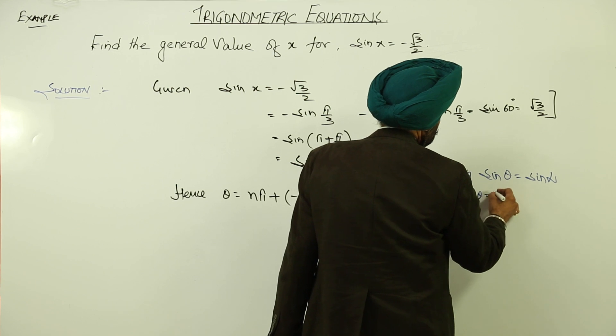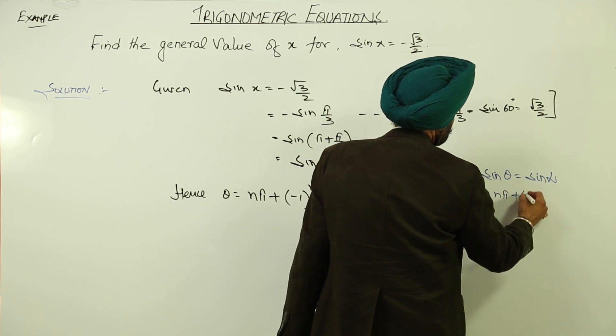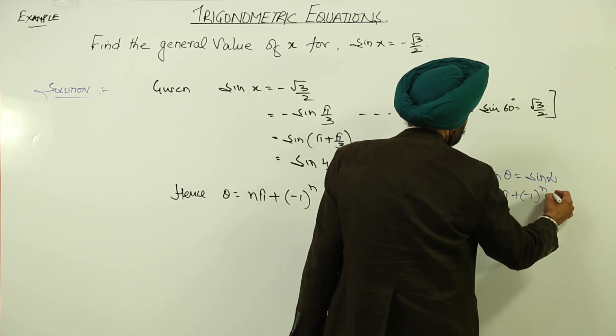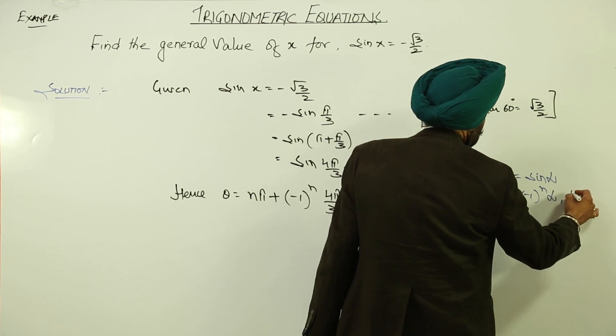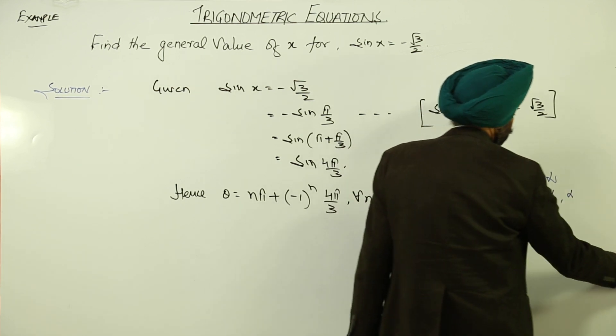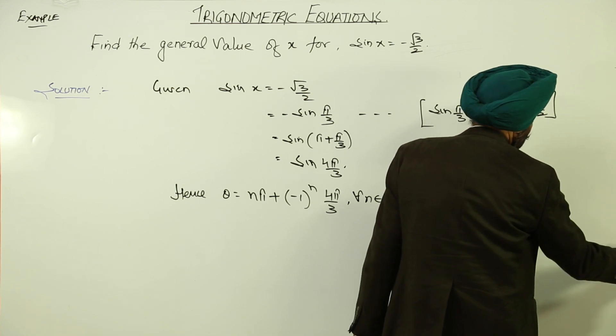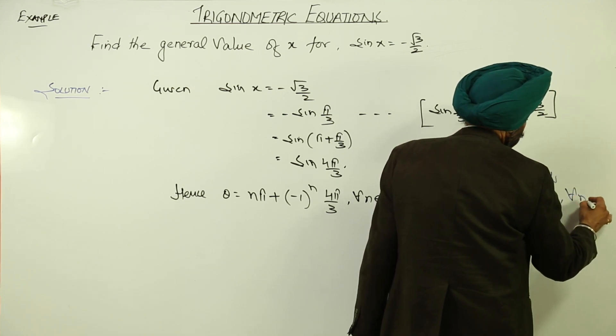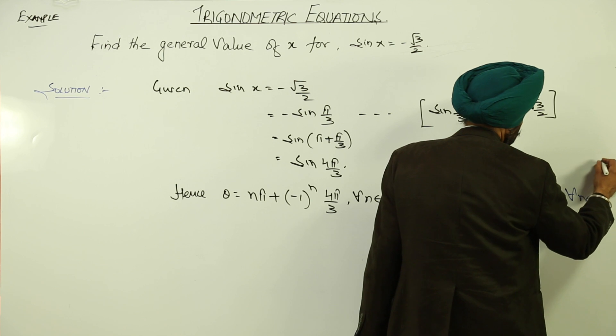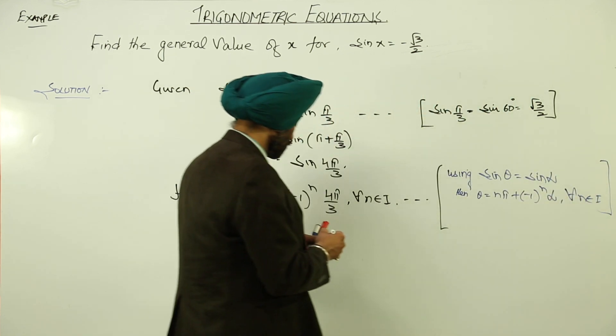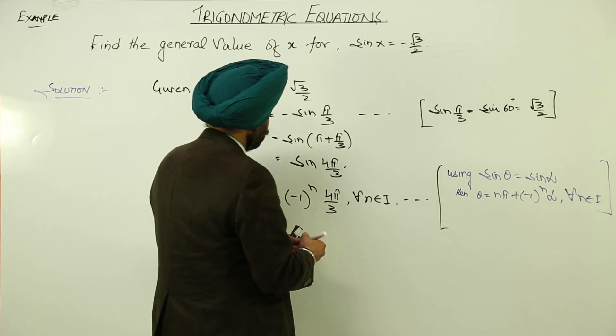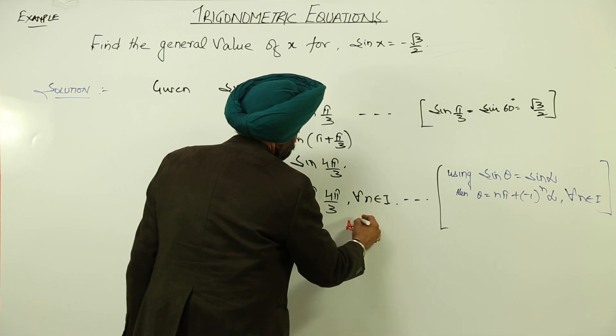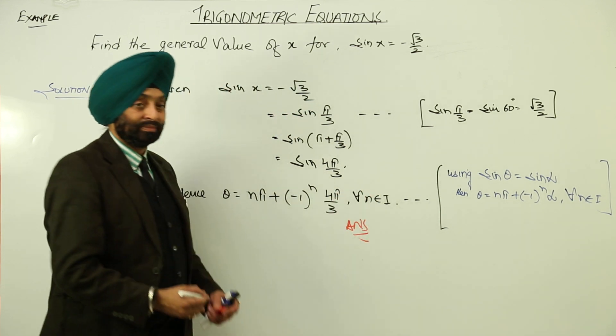So sin theta equals sin alpha. Then theta equals n pi plus negative 1 raised to power n alpha, where n belongs to integers. For all values of n belongs to integers. This is the answer.